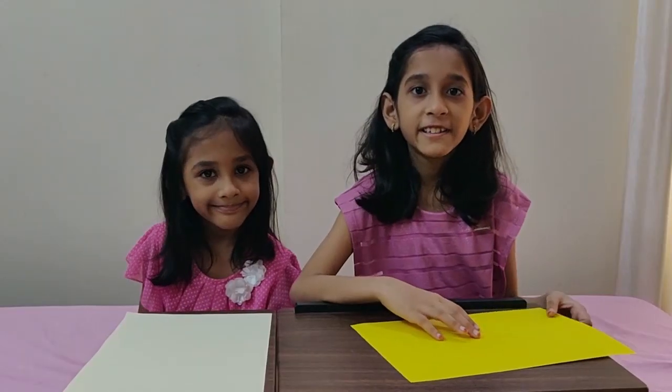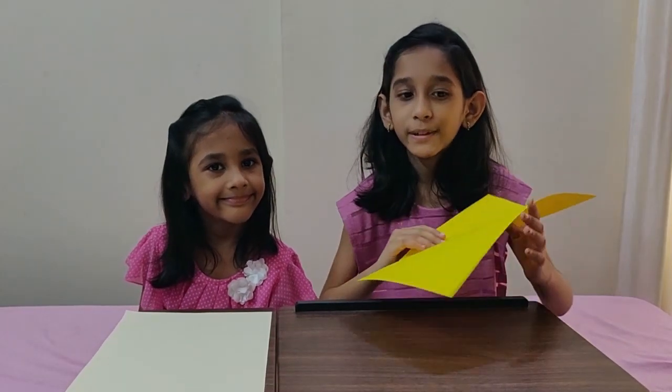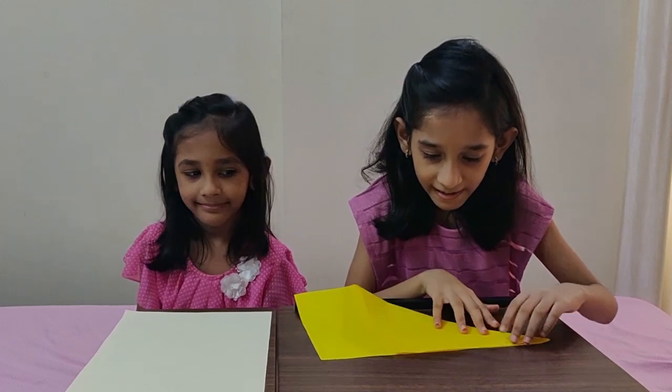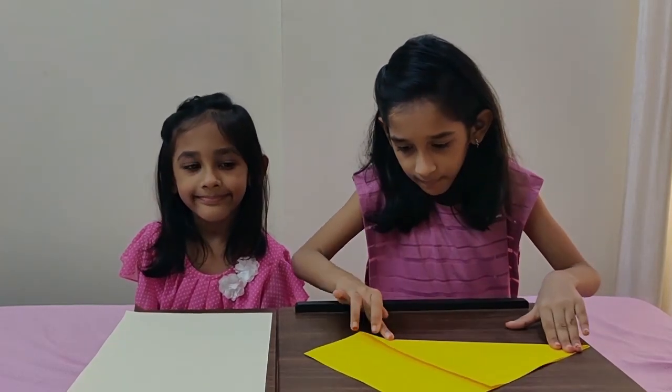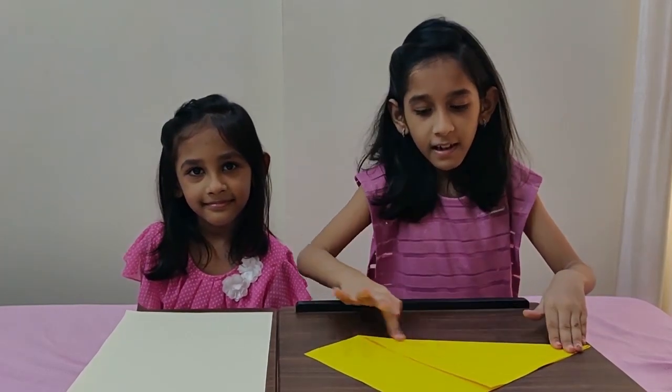To start making a jumping frog, take a paper, fold it like a triangle, cut the extra.